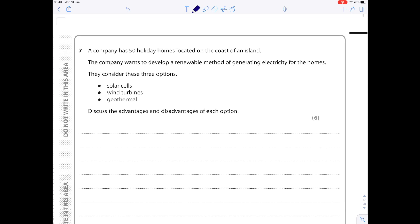A company has 50 holiday homes located on the coast of an island. The company wants to develop a renewable method of generating electricity for the homes. They consider these three options: solar cells, wind turbines, geothermal. Discuss the advantages and disadvantages of each option. Solar cells do not cause atmospheric pollution because they don't release carbon dioxide, and they are renewable. The great thing about solar cells is they can be used in remote locations, on top of little houses in the middle of mountains. However, the major disadvantage is solar cells are unreliable because they only work when the sun shines, and you need a large number of panels.